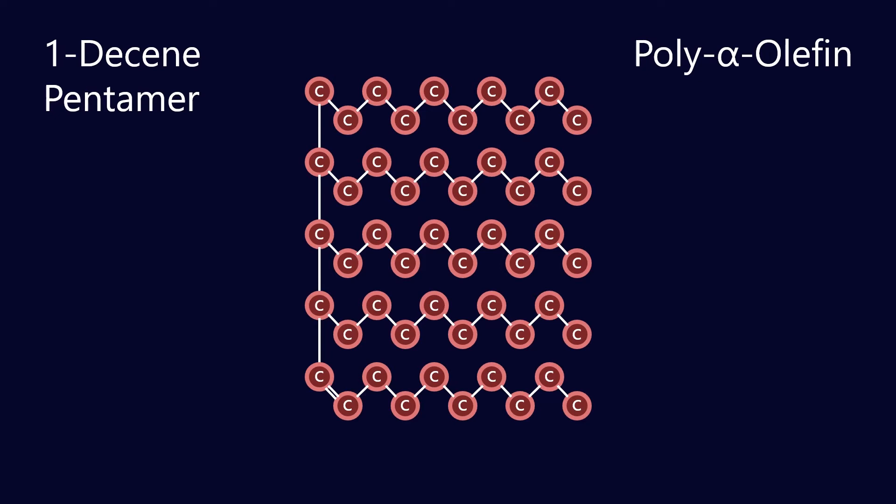When we do that reacting with that catalyst produces a reaction which is called oligomerization. So it's creating oligomers of decene. In this case we've been able to connect and react five decene molecules together to create one poly alpha olefin molecule.